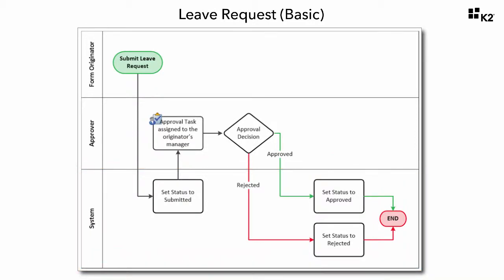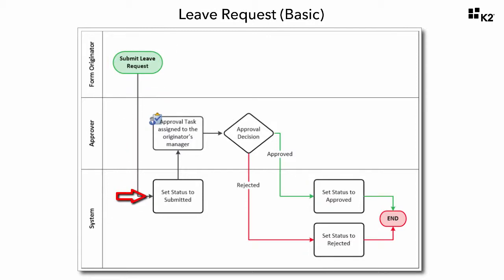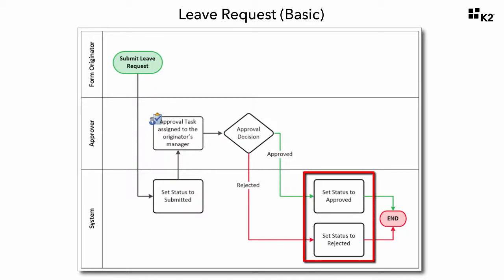At a high level, the leave request originator fills out the leave request form with start and end dates and a leave type. Upon form submittal, the K2 workflow begins with the K2 system updating the leave request record with a status of submitted in the data source, then assigning an approval task to the originator's manager. The manager opens the leave request approval form for review and either approves or rejects the request. Upon completion, the K2 system updates the status column with either approved or rejected, and the workflow completes.